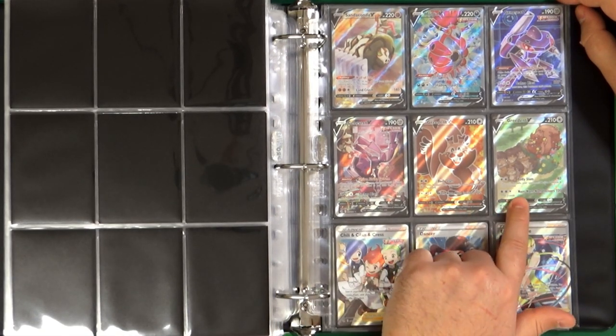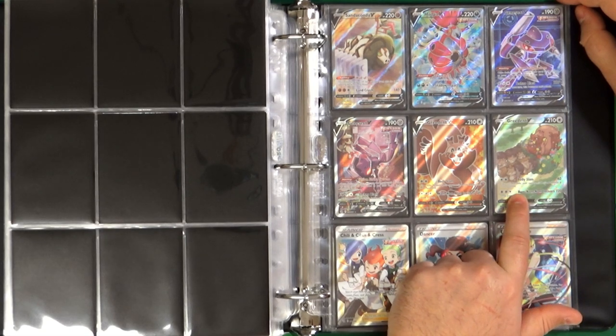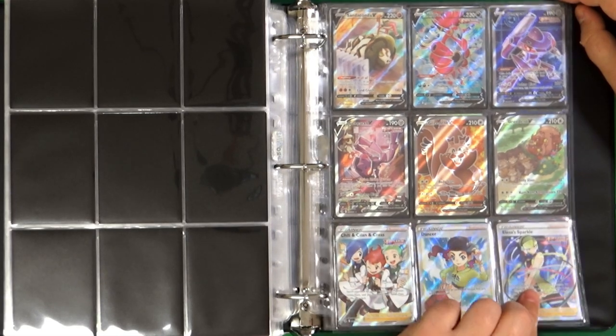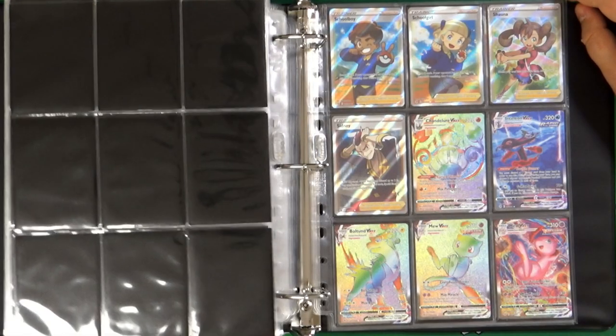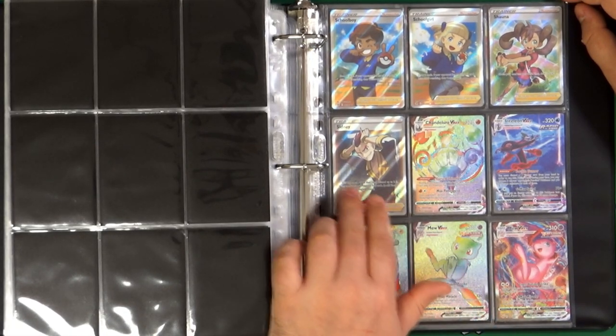Greedent, also with the Alt Art, that in my opinion is really beautiful. Chili, Cilan and Cress. Dancer, Elesa's Sparkle. Schoolboy and Schoolgirl. Shauna, Sidney.